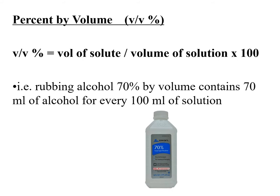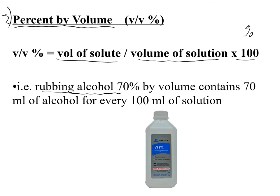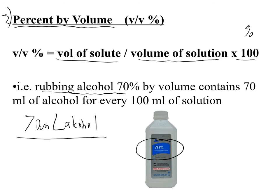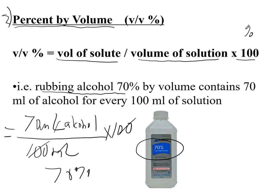The second way to express concentration is percent by volume — volume of solute divided by volume of solution, times 100. For example, rubbing alcohol at 70% volume by volume means 70 milliliters of alcohol in a total solution volume of 100 mL. Multiplying by 100, the hundreds and milliliters cancel, giving a 70% solution.